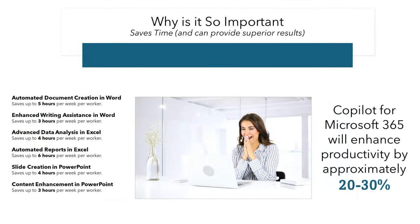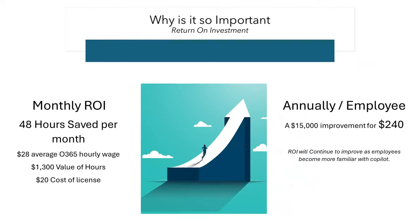But why is Copilot so important? Copilot has been documented to enhance the productivity of administrative office workers by 20 to 30 percent. That's roughly equivalent to an additional 48 hours of labor per employee per month. Since the average hourly wage for an office worker using Microsoft Office in a company with at least 100 employees is approximately $28, the monthly value is roughly $1,300 for a $20 license per employee per month, and it would only improve as employees become more familiar with using Copilot.